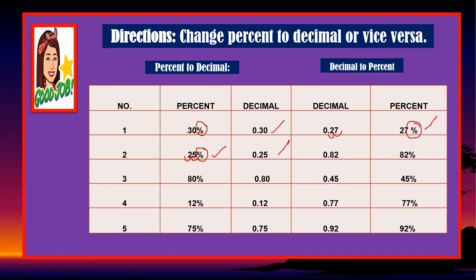This one, 0.82 — change to percent. So move the decimal two places to the right, one and two, then put a percentage sign. Correct. Number three: 80 percent to decimal — same process, correct. Point 45 becomes 45 percent. And 12 percent — remove the percent sign, then move the decimal place two places to the left, one and two. The answer is 0.12.